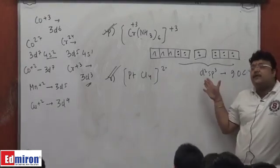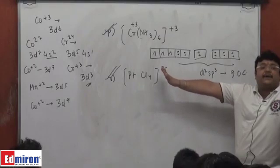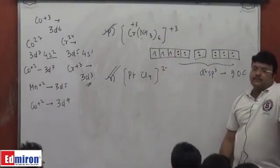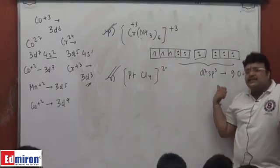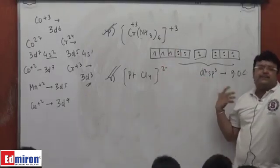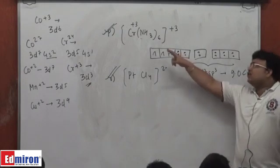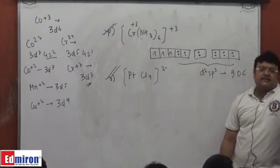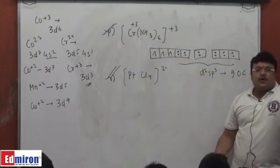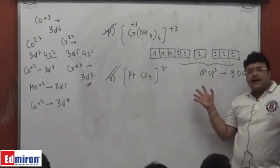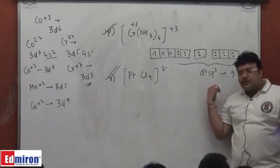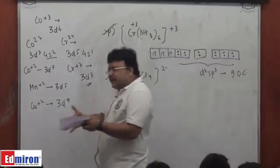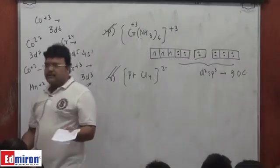I am calling it a low spin complex because I find no electrons are paired up. Yet again, the reason I am calling ammonia a strong field ligand here is because it is finding the inner orbitals — it is projecting into the inner orbitals.